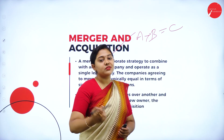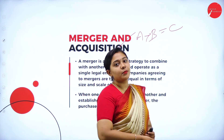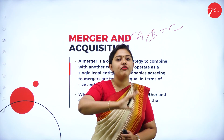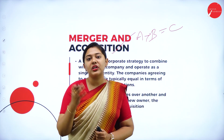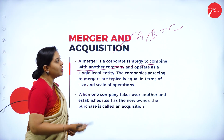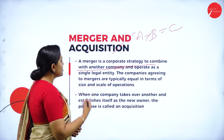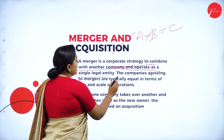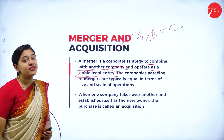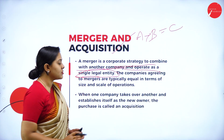A merger is a corporate strategy to combine two companies — Company A and Company B become a single Company C — and operate as a single legal entity. The companies agreeing to merge are typically equal in terms of size and scale of operations. So they have to be equal in size and scale of operations for it to be called a merger.